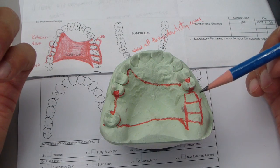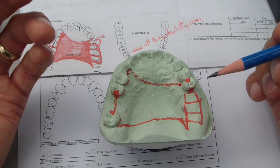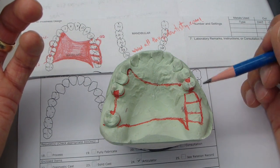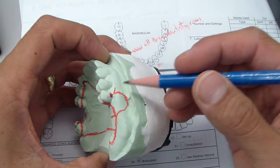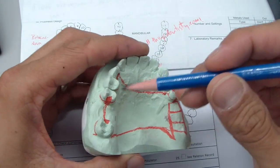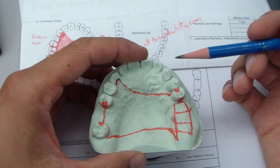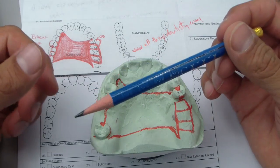Apart from using an RPI - mesial rest, proximal plate, and I-bar in this case here and direct retainers - one of the big concepts that I had to relearn was indirect retention.